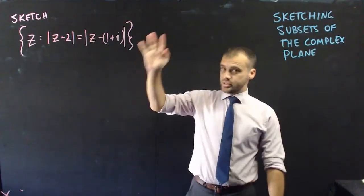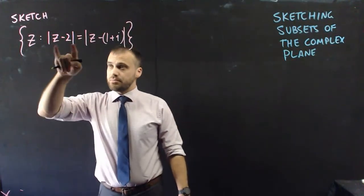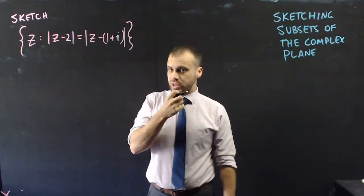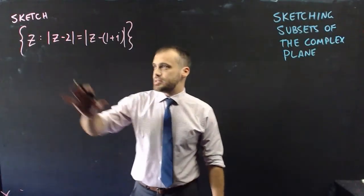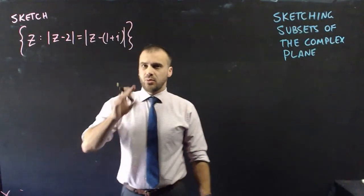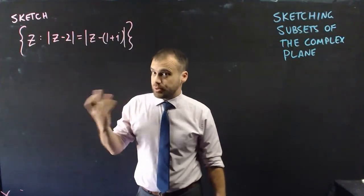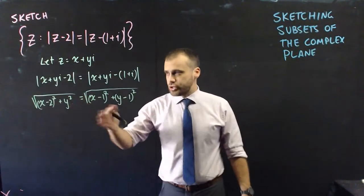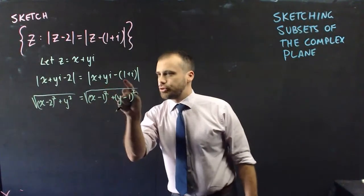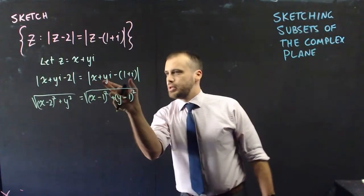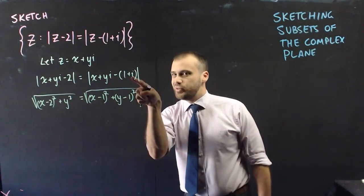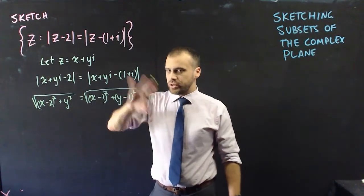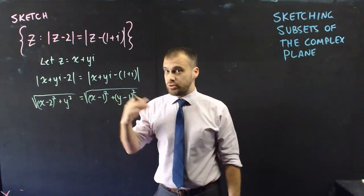Next: the set of all z such that |z − 2| = |z − (1 + i)|. Again, z and z are the same — we express both as x + yi. We find the magnitude of each side, carefully grouping real and imaginary components: on the right side, the imaginary part becomes y − 1. Then we square both sides and expand.